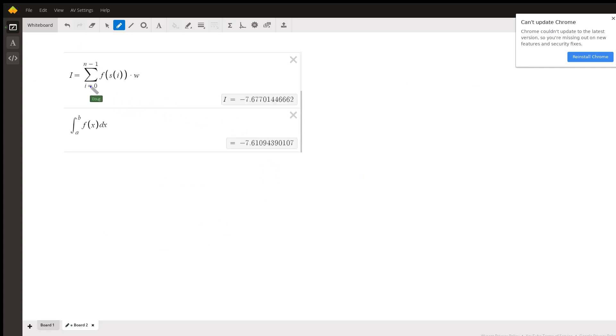there is the sum from i equals 0 to n minus 1 of those height times width: negative 7.677, and so on. And this is actually the exact area,